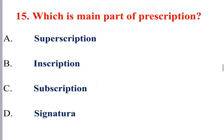Which is the main part of a prescription? The parts are superscription, subscription, sub-description, and signature. The main part is the inscription (answer B). Superscription is 'Rx'. The subscription is the direction for the pharmacist, and the signature is the direction for the patient.